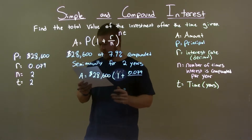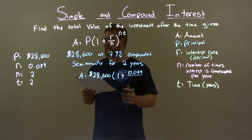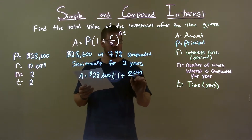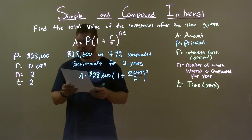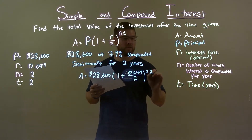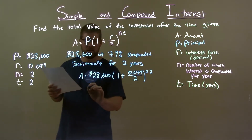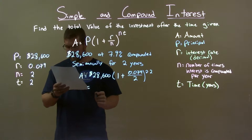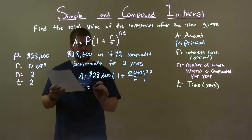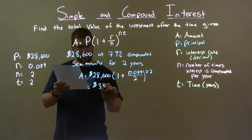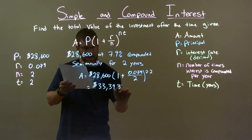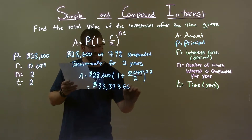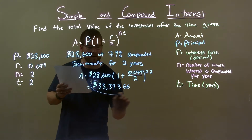Divide by the number of times we compound in a year, which is two — semi-annually — to the exponent of two times the number of years, which is two. This gives us a final investment value of $33,393.66.